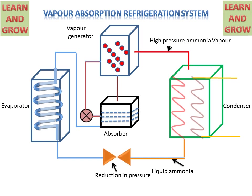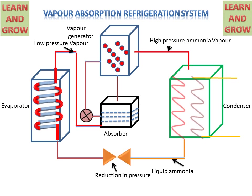This liquid ammonia will reach the expansion valve where a reduction in pressure and temperature will take place. The liquid ammonia plus vapor will then go to the evaporator. The evaporator will extract heat from the liquid ammonia and vapor, converting it completely into vapor form, which then goes back to the absorber. These low pressure vapors will go to the absorber and this cycle will repeat again and again.